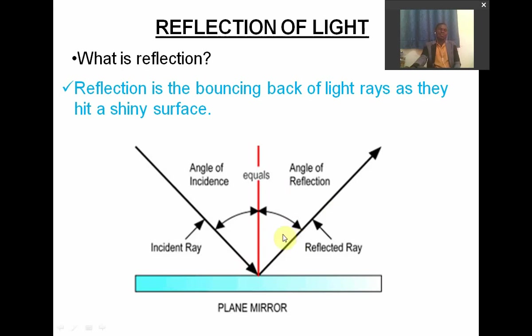When the normal ray meets with the reflected ray, an angle is also formed between them, and that is the angle of reflection: R-E-F-L-E-C-T-I-O-N. So when the incident ray strikes a shiny surface, it is reflected, forming a reflected ray. In between the normal ray and the reflected ray we have the angle of reflection, and in between the incident ray and the normal ray we have the angle of incidence.